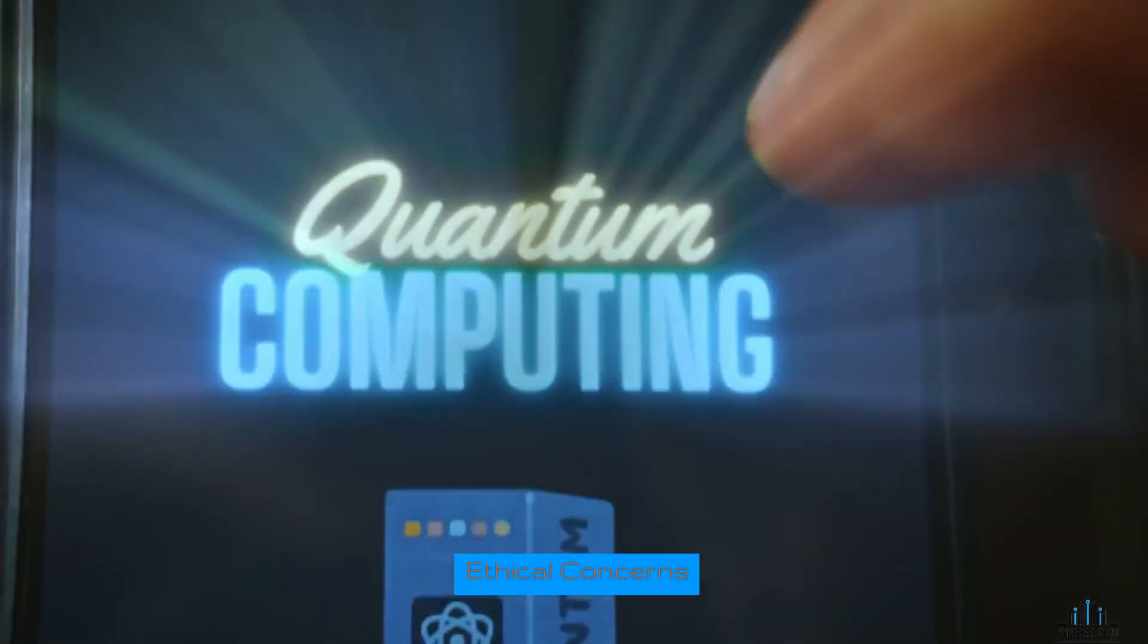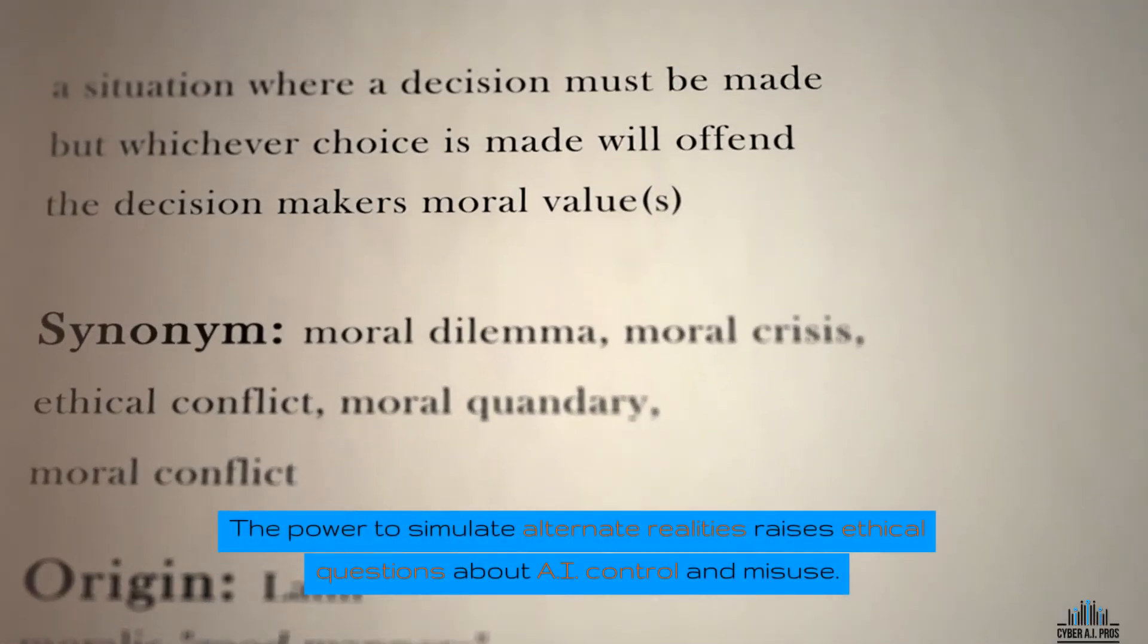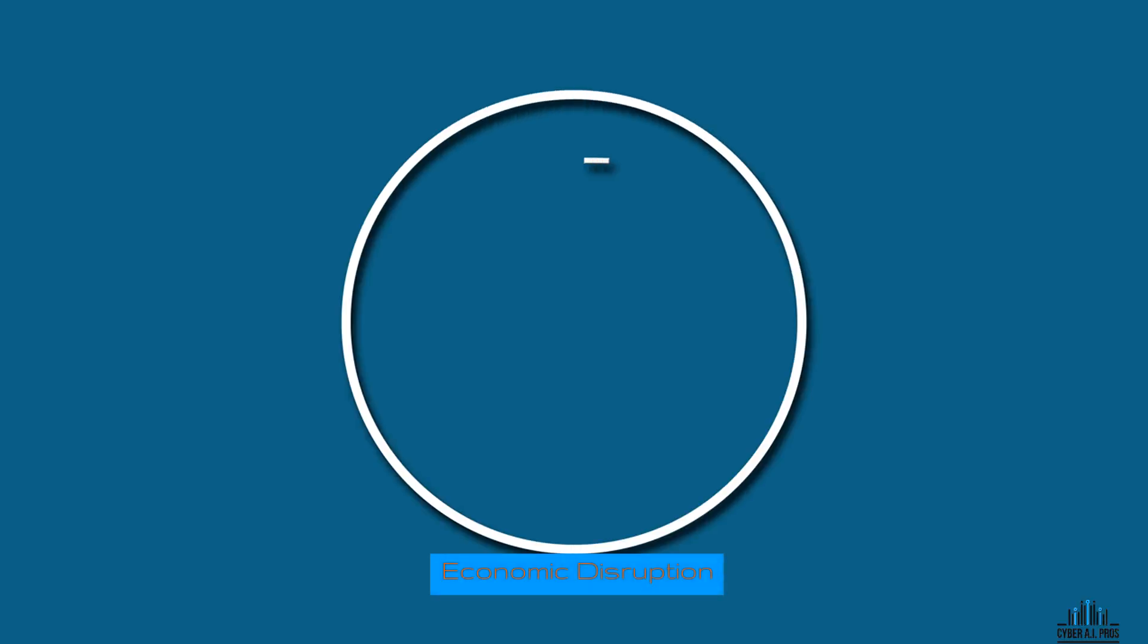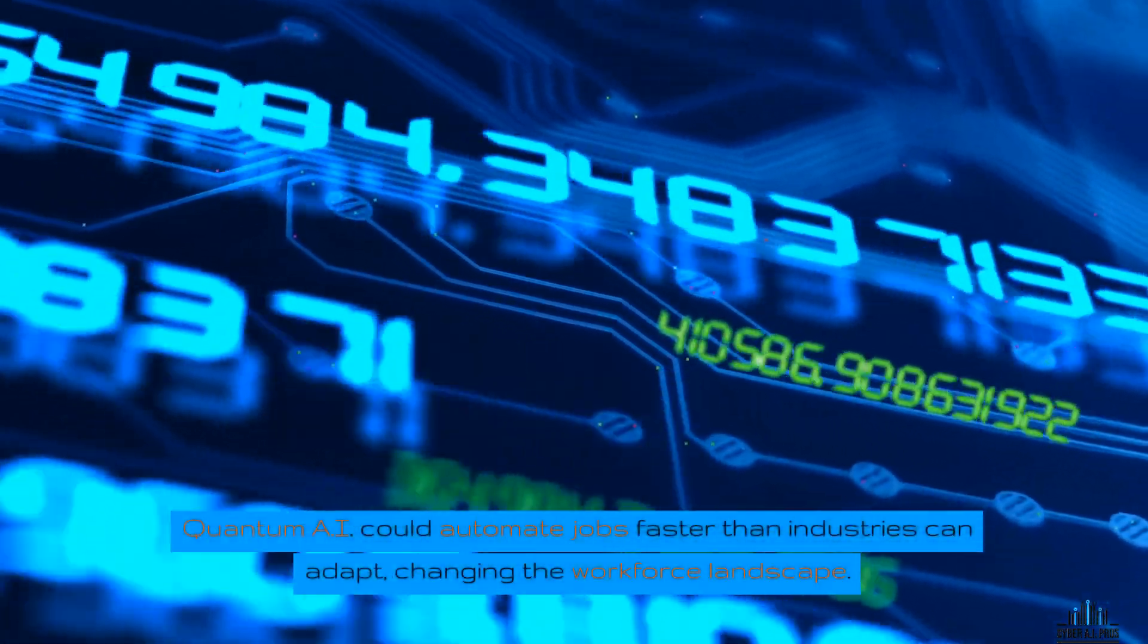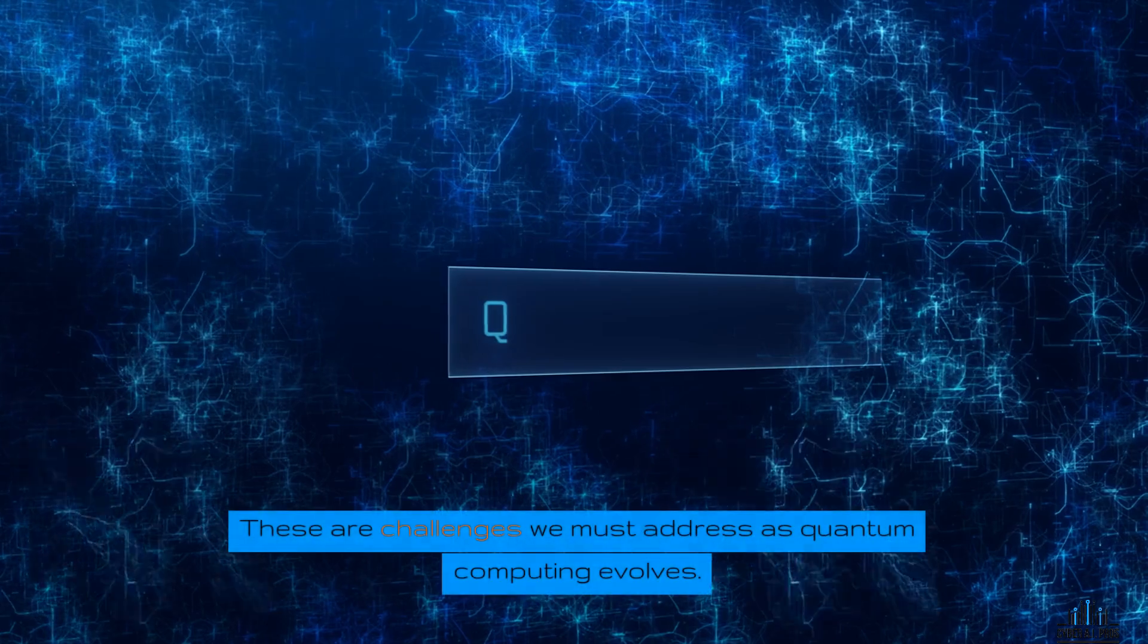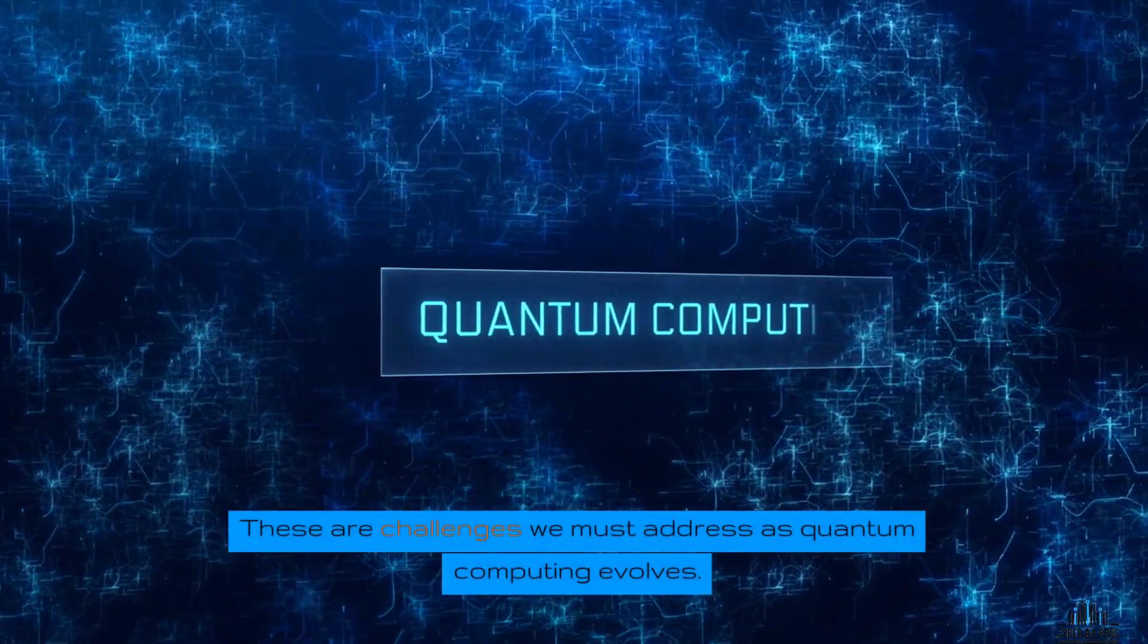Ethical concerns: The power to simulate alternate realities raises ethical questions about AI control and misuse. Economic disruption: Quantum AI could automate jobs faster than industries can adapt, changing the workforce landscape. These are challenges we must address as quantum computing evolves.